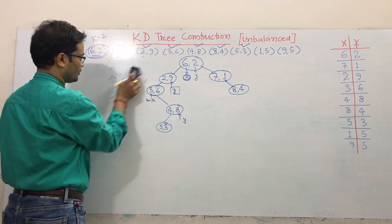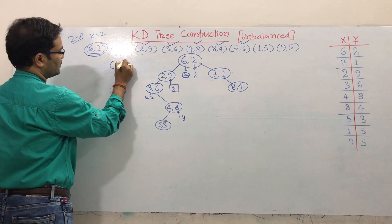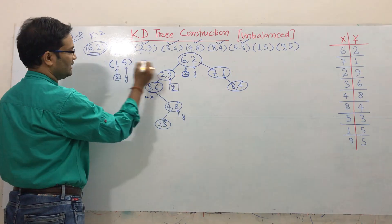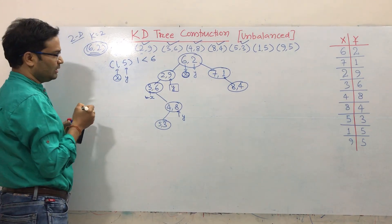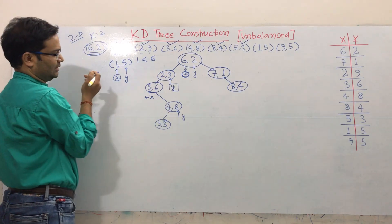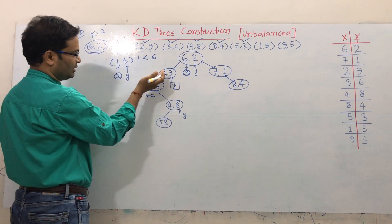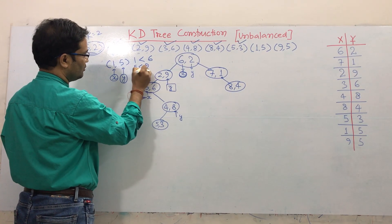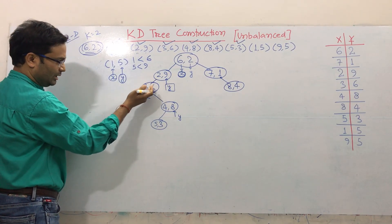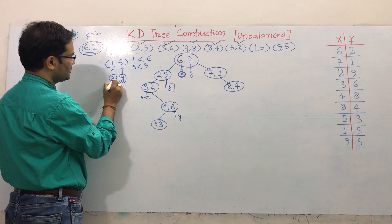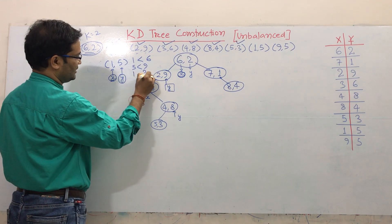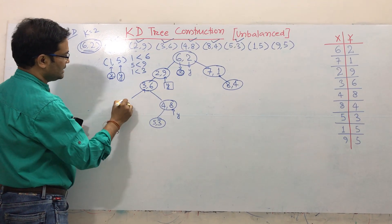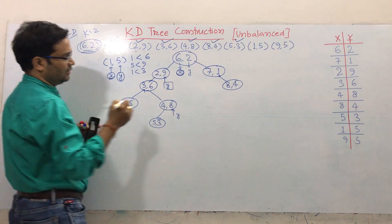Now check the point 1, 5. This is x, this is y. Compare x: 1 and 6 — 6 is greater, so 1 is lesser, it goes left. Left side has 2, 9, so we check y: y=5 is less than 9, goes left. We already have element 3, 6 there, so compare x: x=1 is less than 3, goes left. There is no element on the left side, so 1, 5 comes here.